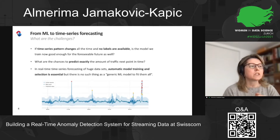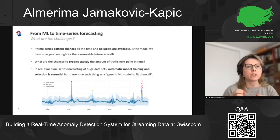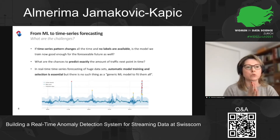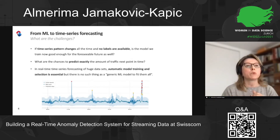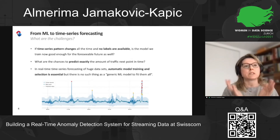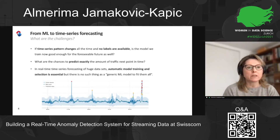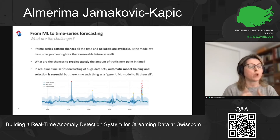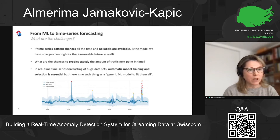Ideally, each type of time series would fit a different model, but you don't have the time or resources for that. So you usually end up with some generic model or set of generic models applied to a group of time series with similar properties. You also have to accept that sometimes there will be a model that performs much better than what you end up with in production. That is simply the price you pay when doing things in real time. There is no free lunch.